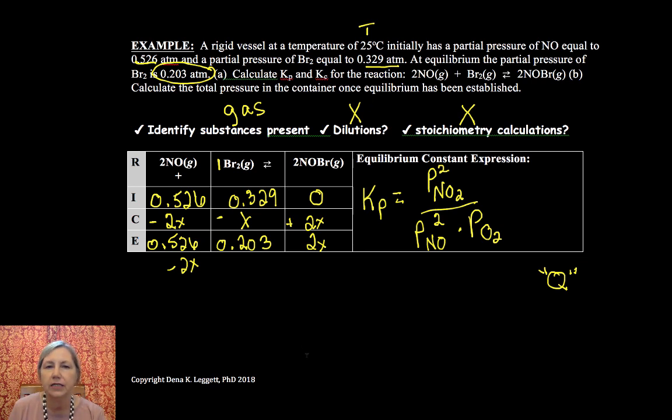Now we can start our problem solving. Because I know both an initial and an equilibrium, I can solve for X. Because 0.329 minus X is equal to 0.203. So X is equal to 0.126.